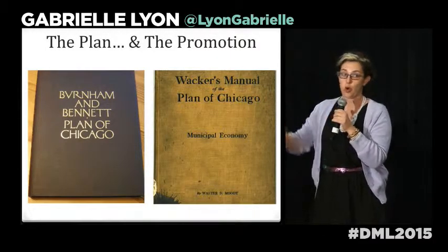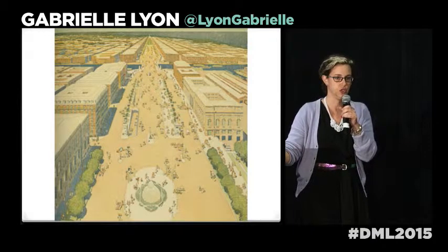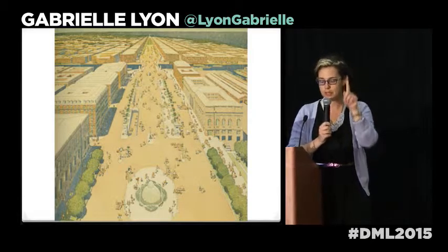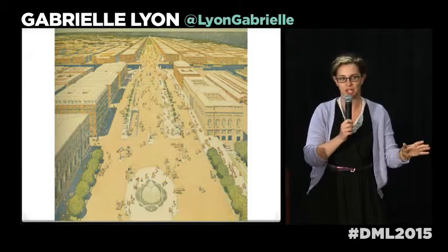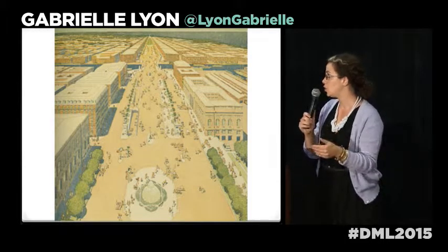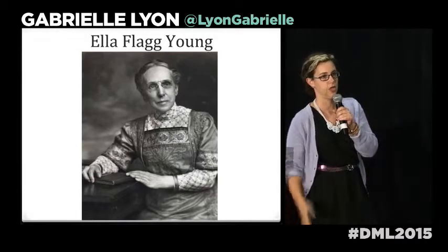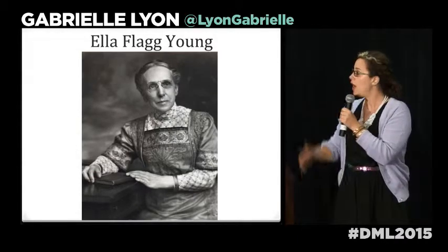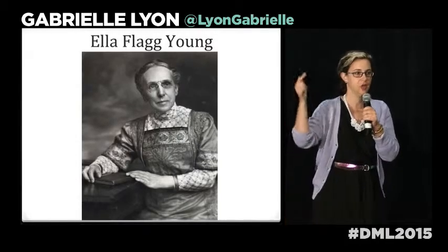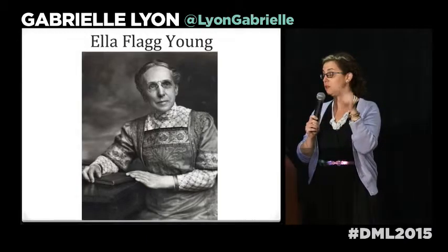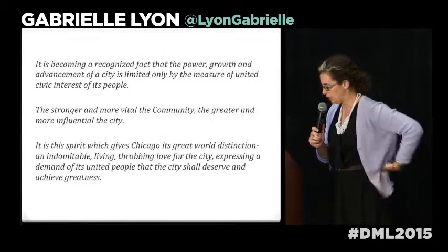So Daniel Burnham and Edward Bennett made a plan. And then two years later, they made a plan for students called the Wacker Manual. They had one mission: that students have to be active stewards of their city. So they made the Plan of Chicago, but the heart of it was really what could students do. And this woman, Ella Flag Young, who was a disciple of John Dewey, the great progressive educator, she said this is awesome — it's mandatory. Every single kid who is an eighth grader in Chicago is going to read the Wacker Manual. In fact, Mayor Jay Daley actually read the Wacker Manual when he was a kid.